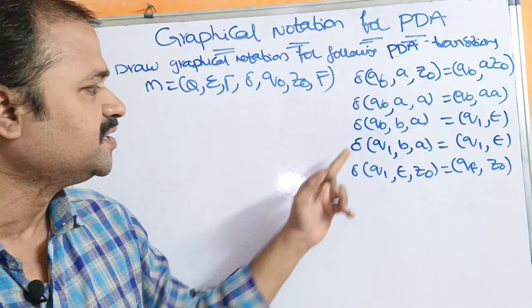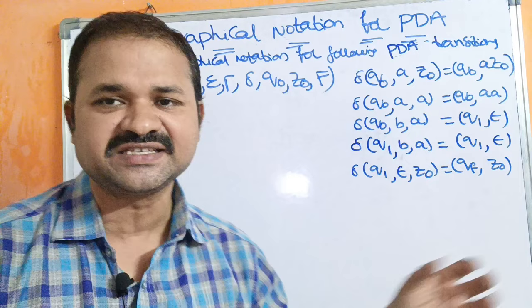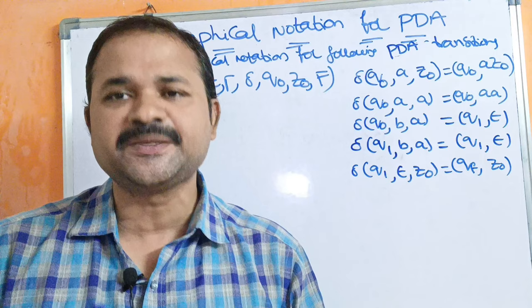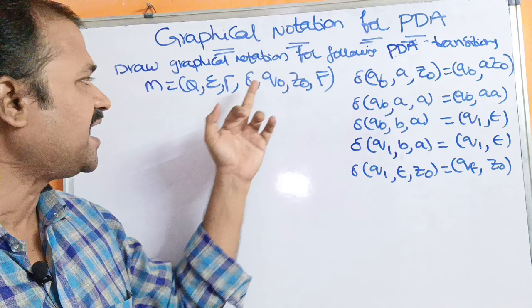Five transition functions are given. According to these 5 transition functions, we have to draw the graphical notation. We know that PDA is represented by 7 tuples: Q, Sigma, Tau, Delta, Q0, Z0, and F.